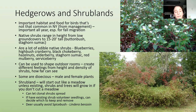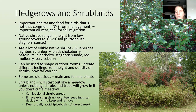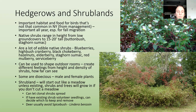There are a lot of edible native shrubs: blueberries, highbush cranberry, black chokeberry, hazelnuts, elderberry, staghorn sumac, red mulberry, and serviceberry. Shrubs are really important for shaping outdoor rooms — creating different feelings based on height and density and how far you can see. Some are dioecious, meaning they have male and female flowers on different plants, so you need to plant enough to get pollinated and actually get fruit for birds and people.